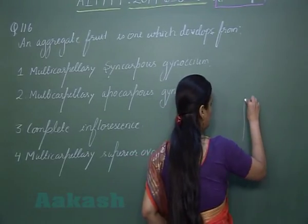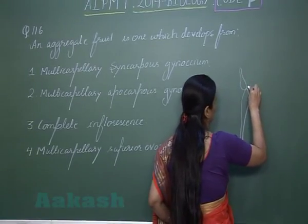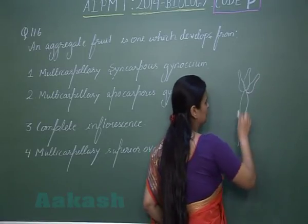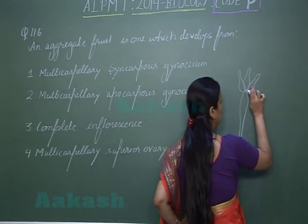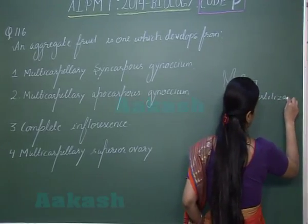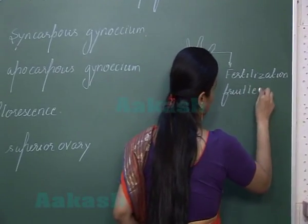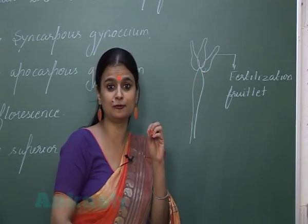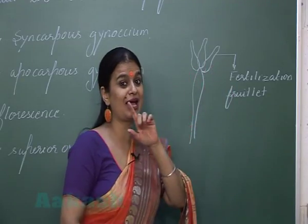In a single flower with several free carpels, after fertilization each carpel will form a structure known as a fruitlet. In a single flower there will be formation of several fruitlets, and this group of fruitlets is called an aggregate fruit.